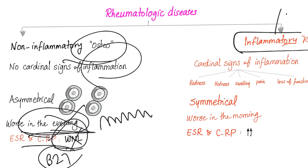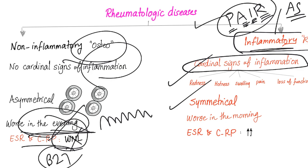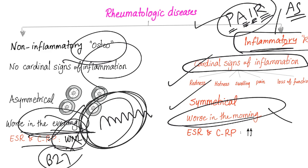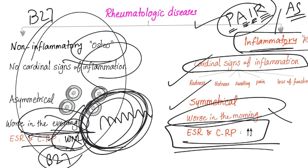Inflammatory arthritis, on the other hand — such as ankylosing spondylitis, psoriatic arthritis, inflammatory bowel disease-associated arthritis, and reactive arthritis — all have cardinal signs of inflammation. Symmetrical involvement, because the autoantibodies don't care. Worse in the morning, and as the day progresses you wash out the inflammatory debris and your symptoms improve. ESR and CRP in inflammatory arthritis should be high — that's why we call them acute phase reactants.